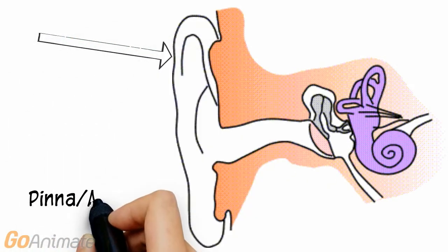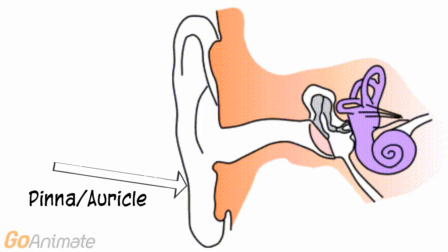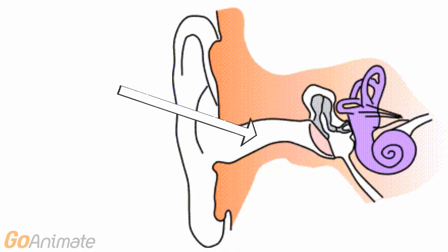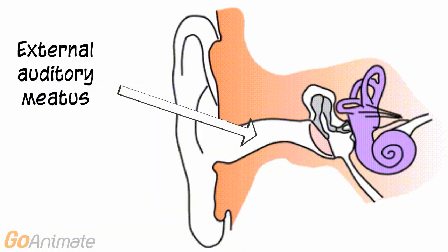The ear consists of three main divisions. The external or outer ear includes the pinna or auricle and the external auditory meatus.